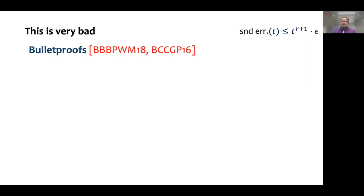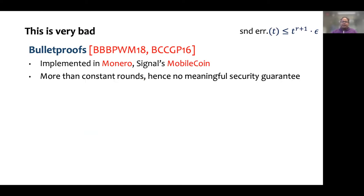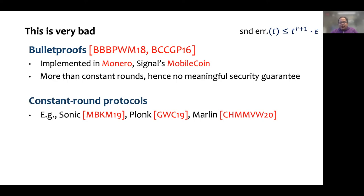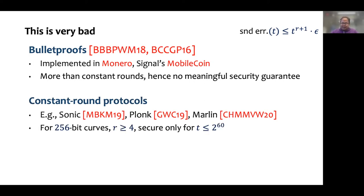Our first example involves bulletproofs, which is a popular argument system deployed in practice in Monero and Signal's mobile payments. The interactive protocol has more than a constant number of rounds, meaning that t^(r+1) is huge and we get no meaningful security guarantees. It might appear that this is fine for constant-round protocols, but even then the situation is not as nice as you would think. It is not uncommon for these protocols to have at least four rounds, and because of the loss in the transformation for 256-bit curves, we cannot get security guarantees for adversaries running in time beyond 2^60, which is not very meaningful.